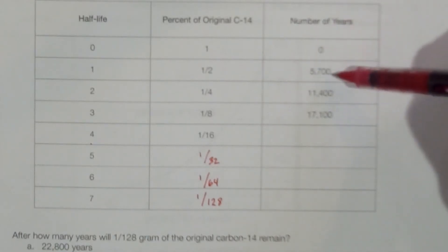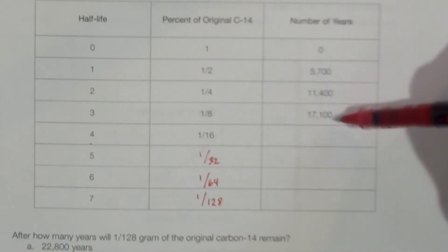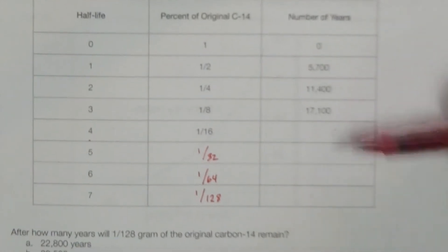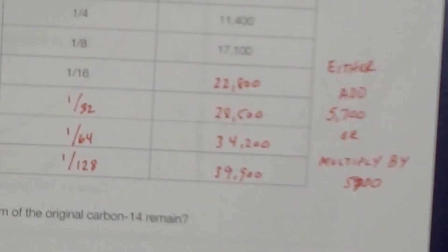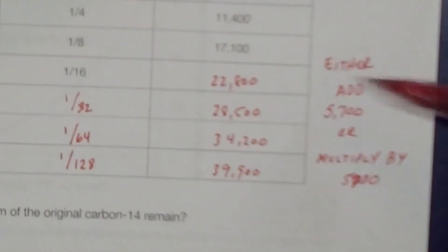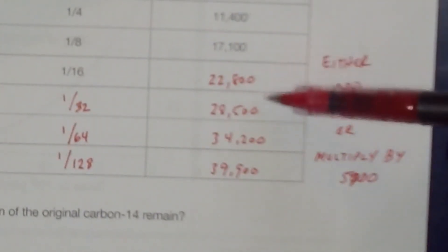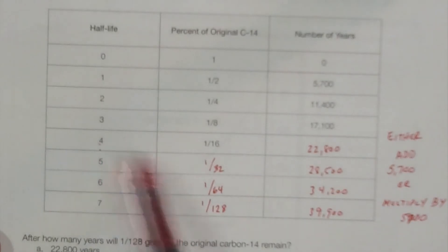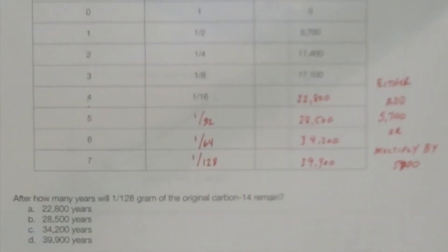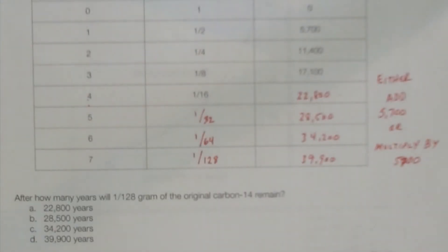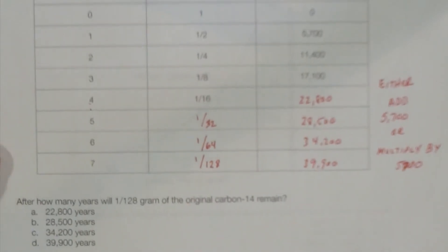For the number of years, carbon-14 goes 0, 5,700, 11,400, 17,100. Carbon-14 has a half-life of 5,700 years. To fill in the chart, we either add 5,700 to each column, or we multiply: 4 × 5,700, 5 × 5,700, 6 × 5,700, 7 × 5,700.